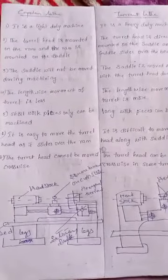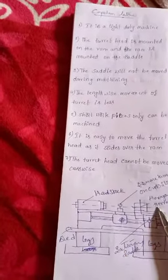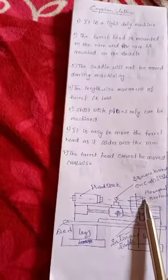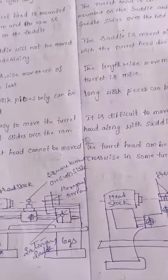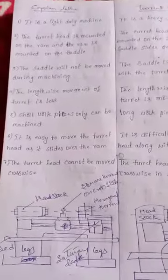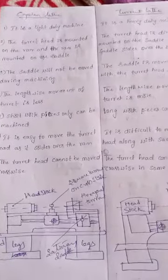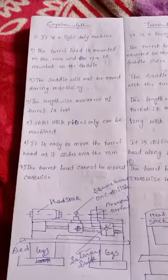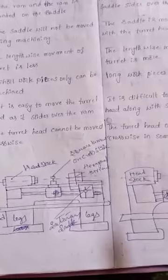The second point is: in the capstan lathe, the turret head is mounted on the ram, and the ram is mounted on the saddle. In the turret lathe, the turret head is directly mounted on the saddle, and the saddle slides over the bed base.